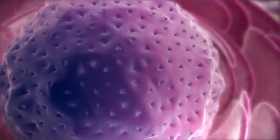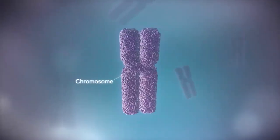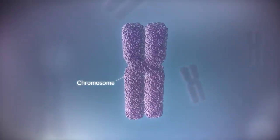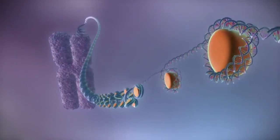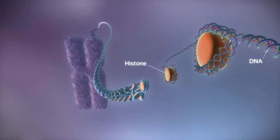In humans, the genome is split between 23 pairs of chromosomes. Each chromosome contains a long strand of DNA, tightly packaged around proteins called histones.